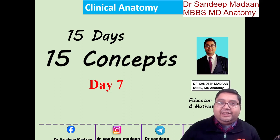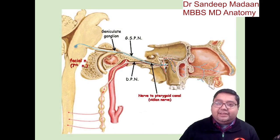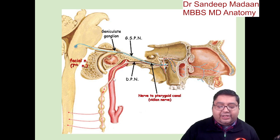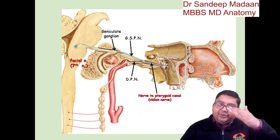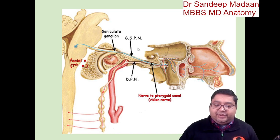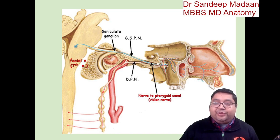In the head and neck chapter we come across different parasympathetic ganglia. We can see that this particular bone is the petrous bone, and this nerve is superficial to the petrous bone — that's why it is called the greater superficial petrosal nerve. The sympathetic fibers traveling along the internal carotid artery are deep to the petrous bone, so they are called the deep petrosal nerve. Together they pass through the pterygoid canal.